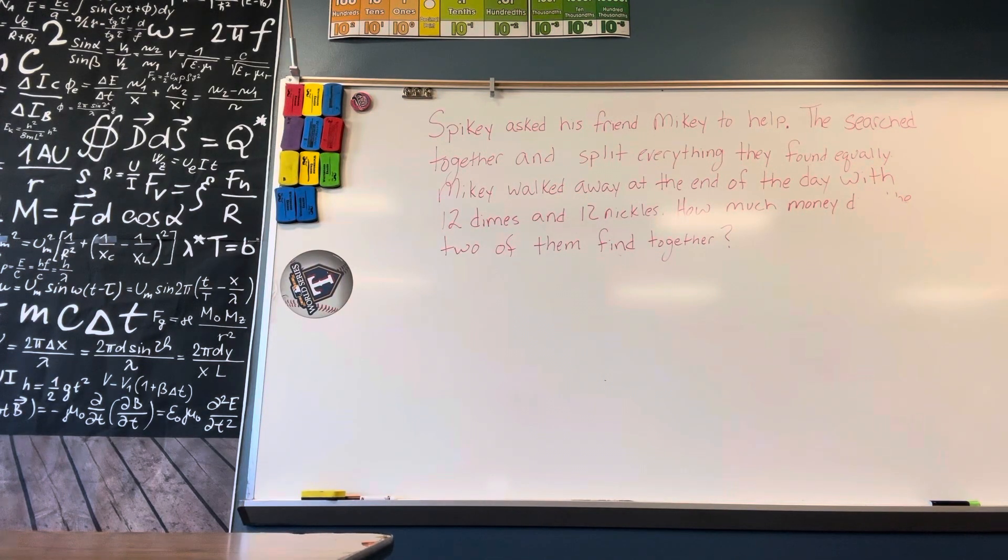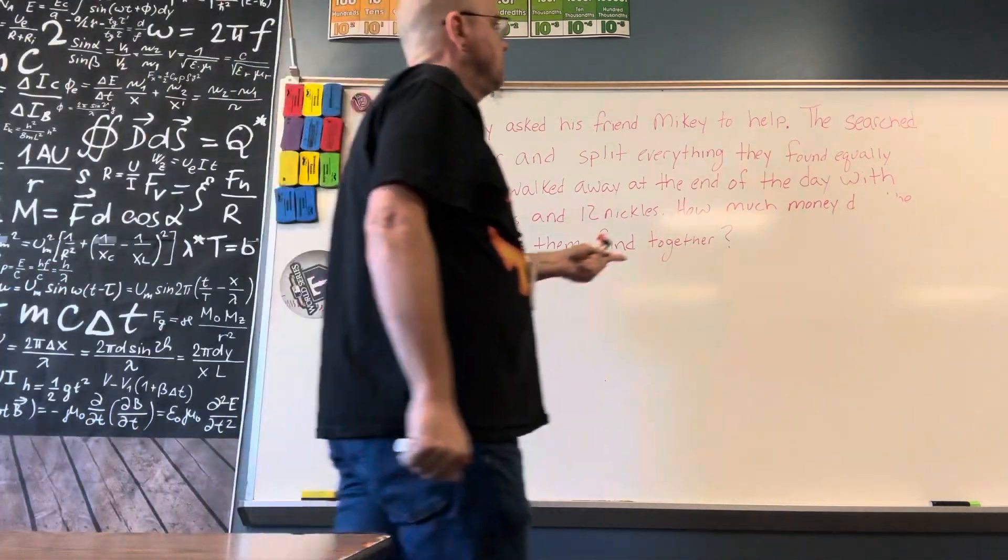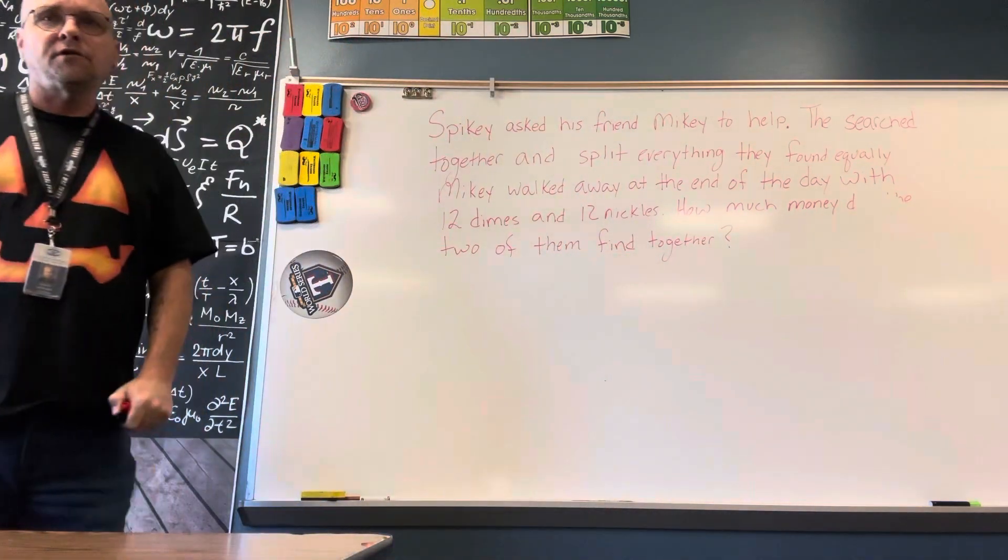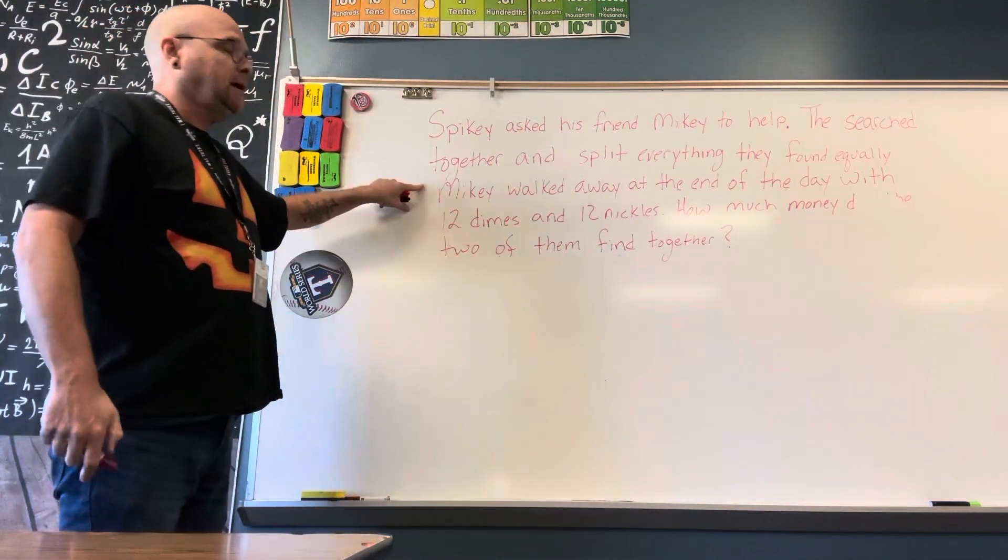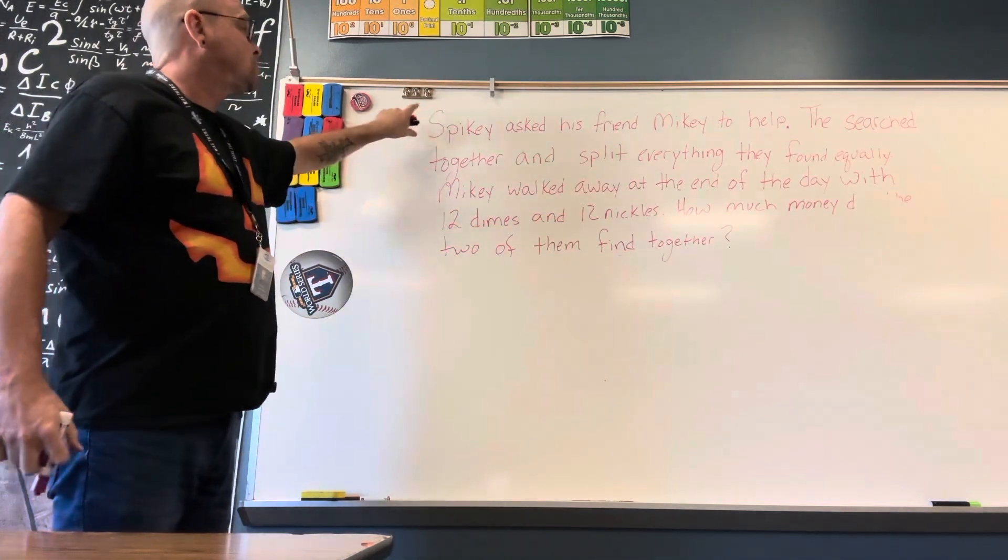Spiky asked his friend Mikey to help him. They searched together and split everything they found equally. Mikey walked away at the end of the day with 12 dimes and 12 nickels. How much money did the two of them find together? Alright, so we have to add Mikey's plus Spiky's together.